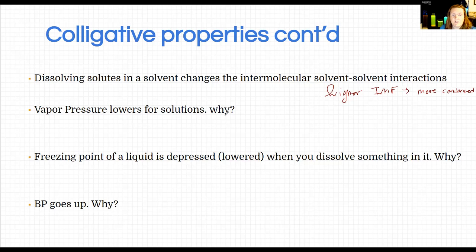So the reason vapor pressure, which again is the number of atmospheres of a gas in a closed container over a liquid, the reason vapor pressure goes down is because you're literally pulling those gas molecules harder into the liquid phase using a stronger intermolecular force from the solute.